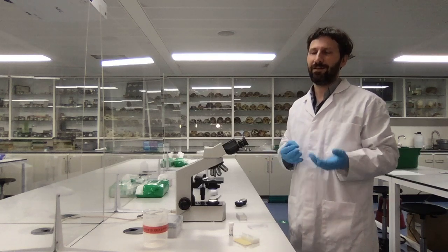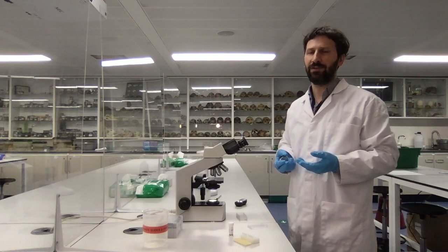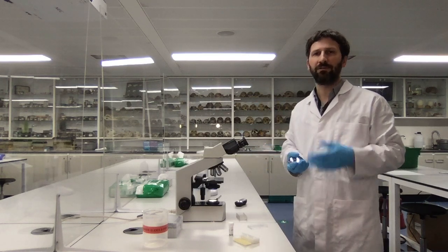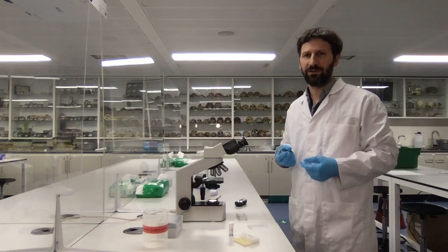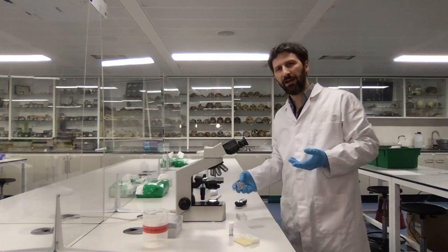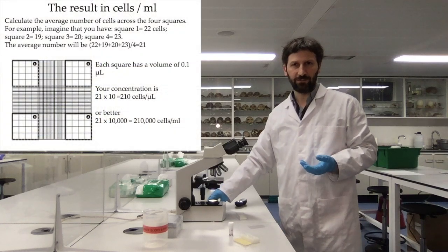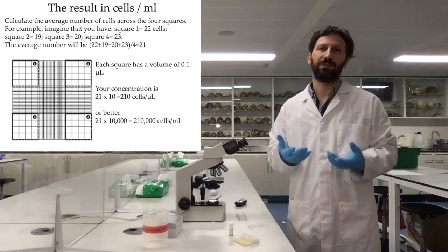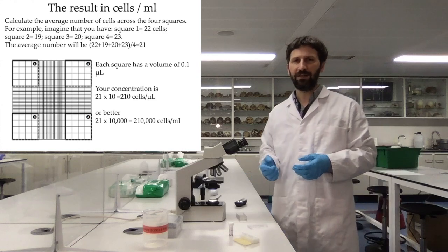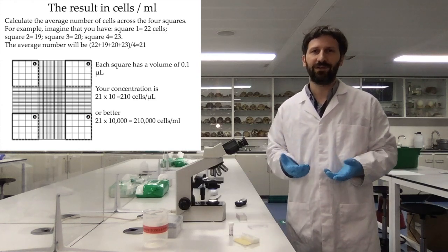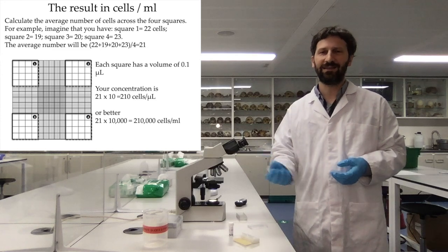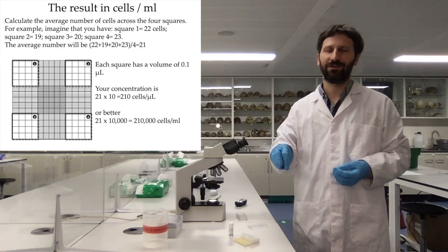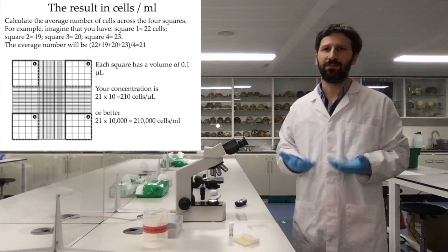As a rule, I count all cells that touch the top and left edges of the square, and exclude those that touch the right and bottom edges. Once I have my count, I repeat it for each square and take the average for a more precise estimate. With Euglena in particular, I need to be very quick, because as they can sense light they will move towards it — if you wait too long, you will find all of them clustered in the same corner, and your density estimate will be biased.